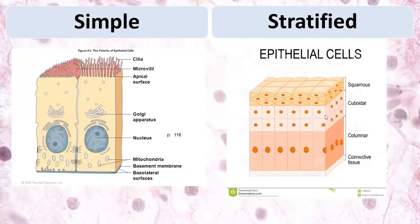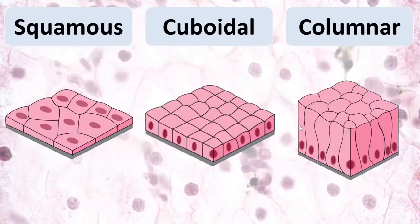Simple epithelium and stratified epithelium have different features of polarity. Simple epithelium has polarity of the cells — different parts of the cells have different features and different distribution of organelles. Stratified epithelium has polarity of the cell layers — cells in different layers have different structure, and this is the polarity of stratified epithelium.